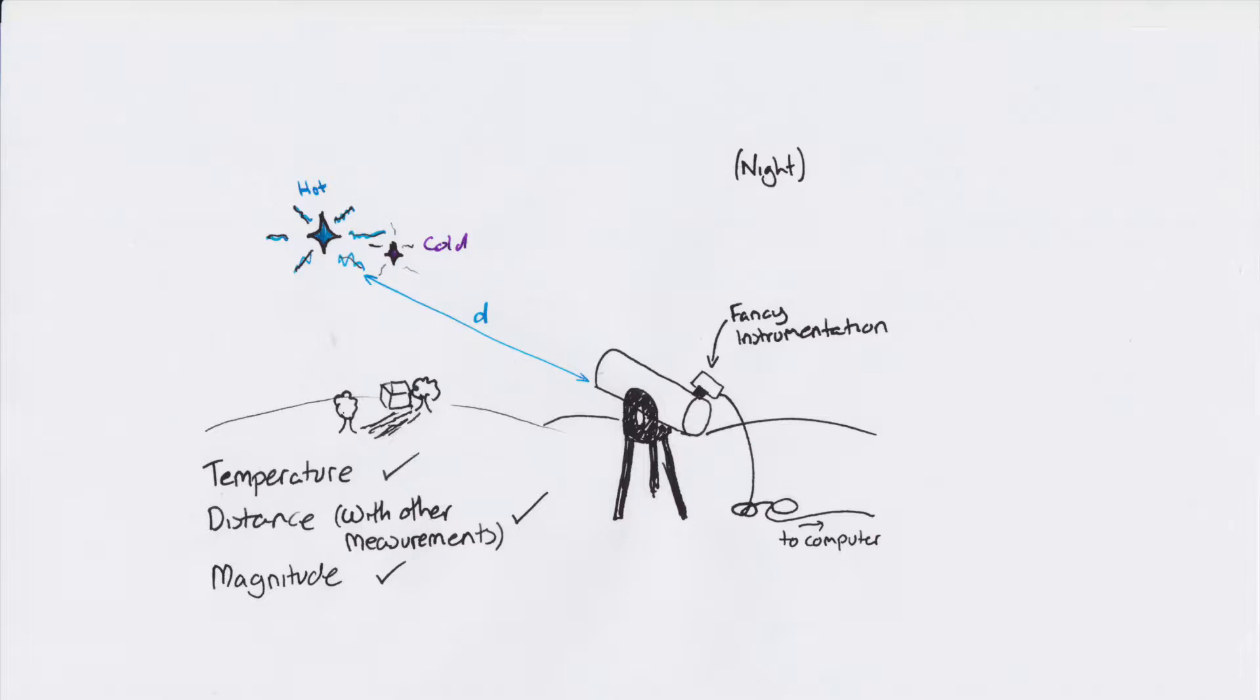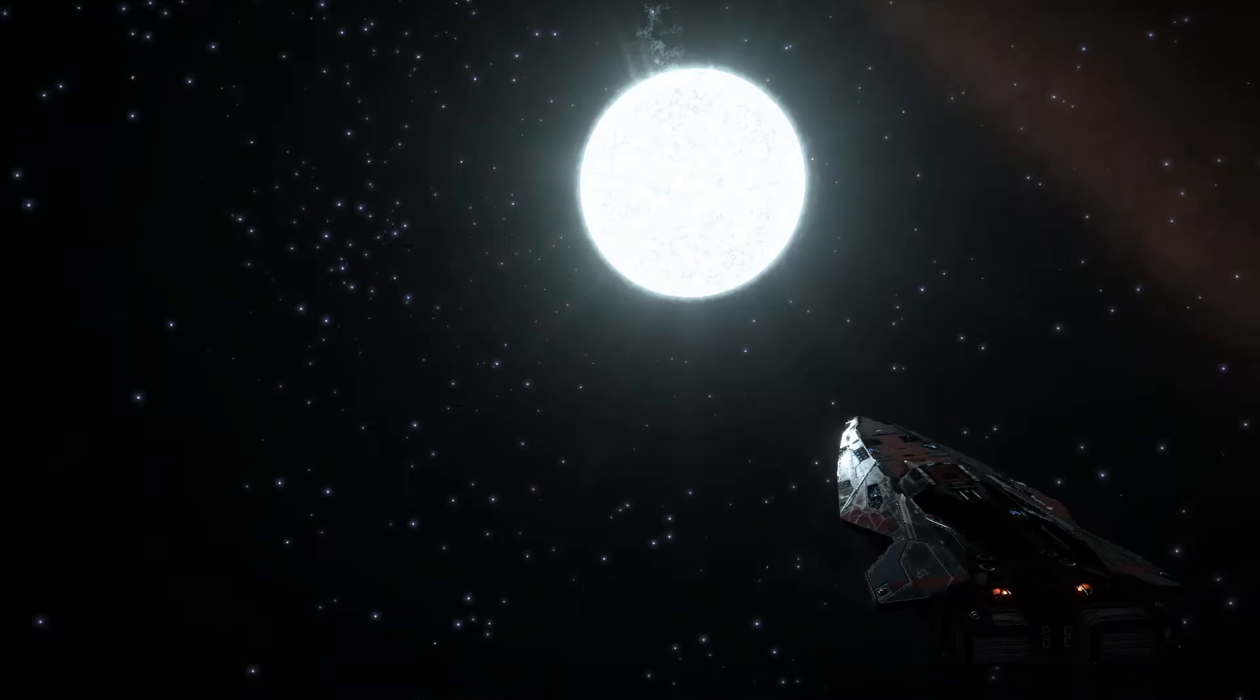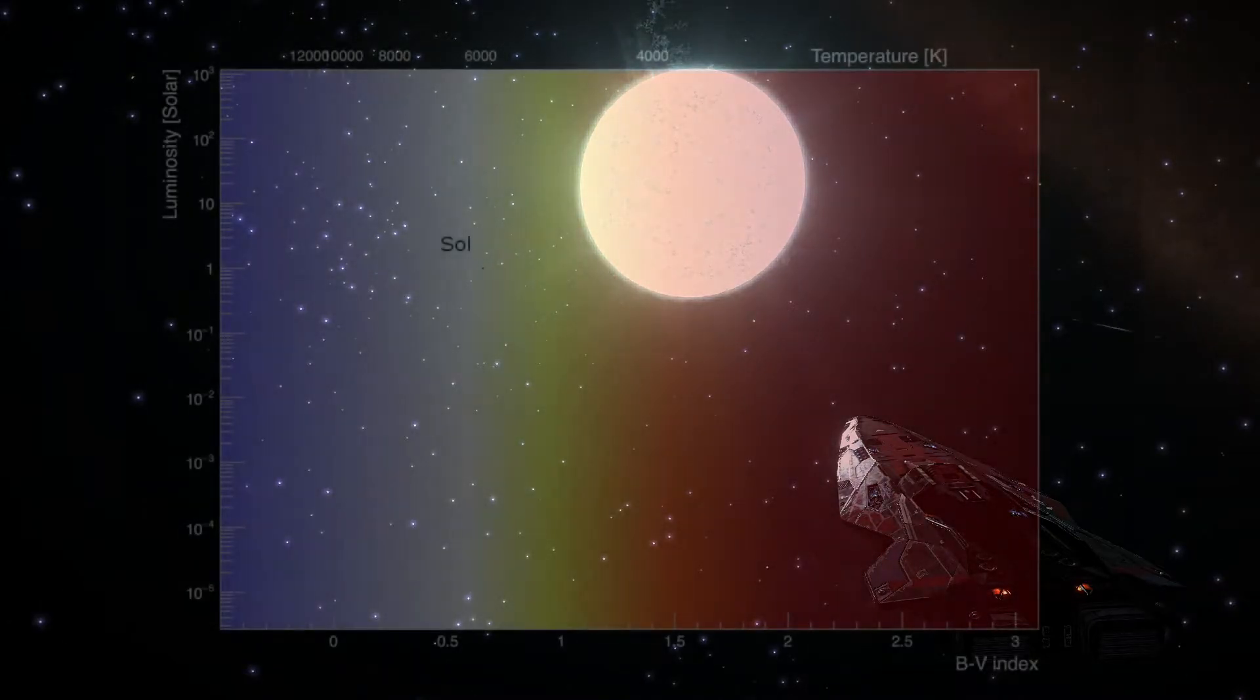When we look at a star using a telescope, we can easily, in inverted commas, determine three things: the color spectrum, the brightness, and with a few other measurements, the distance. Using this data, we can thus calculate the total energy output of a star, or its luminosity. And now, for a plot.